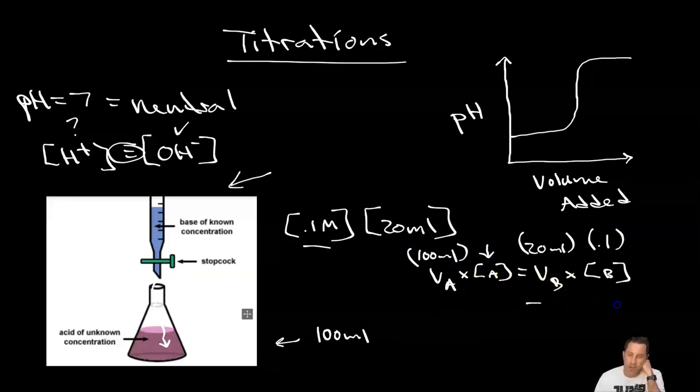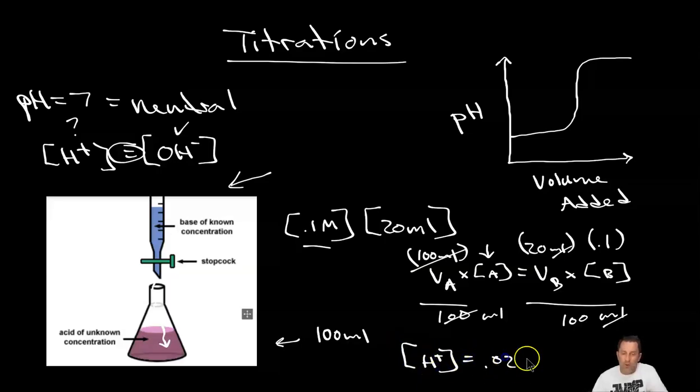So now I just have to solve for this value which is my only unknown. To do that I divide both sides by 100. That gets rid of the unit milliliters. It leaves me with 20 times 0.1 divided by 100. And plugging that into my calculator I got that the concentration of my acid is equal to 0.02 molar.